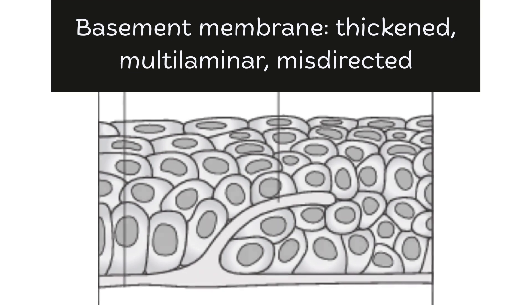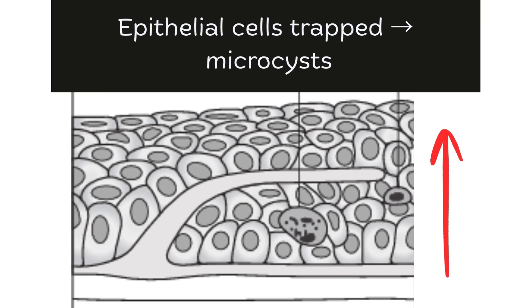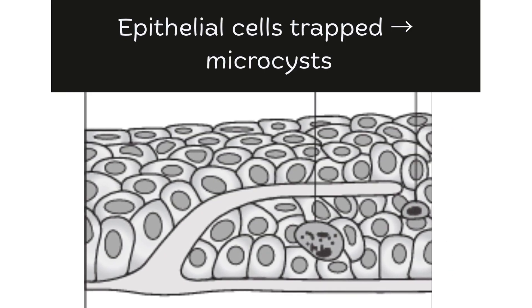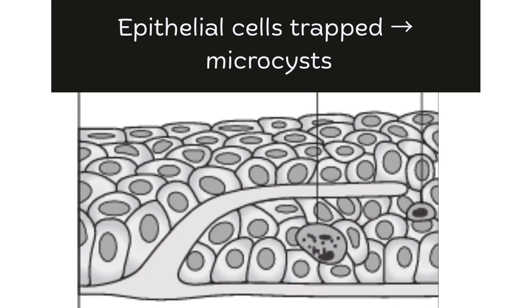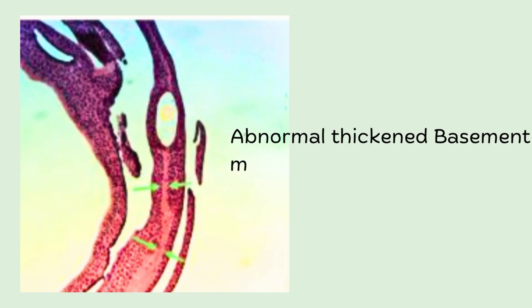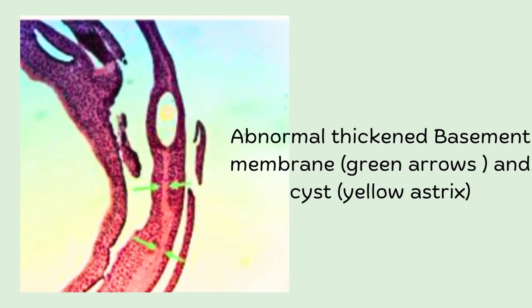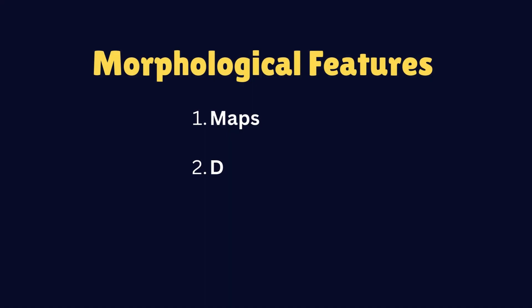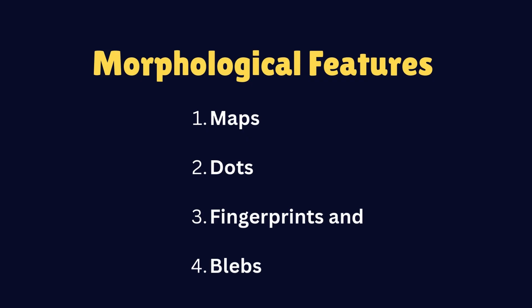Instead of guiding the epithelial cells upward towards the surface, this faulty basement membrane traps them within the epithelium. Over time, these trapped epithelial cells degenerate, forming small cysts — what we clinically see as microcysts. On slit-lamp examination, the epithelial basement membrane dystrophy has some classic morphological patterns: MAPs, fingerprints, dots, and blebs.